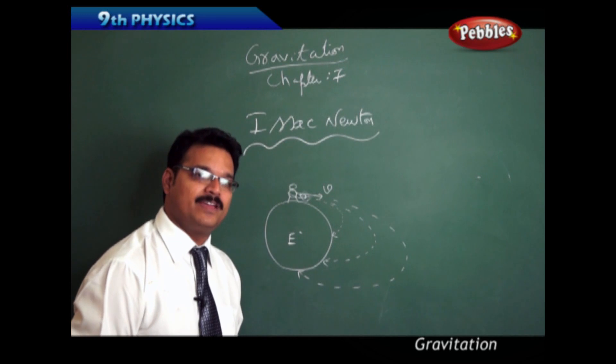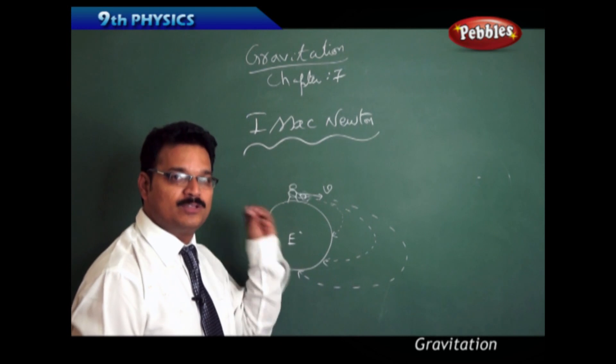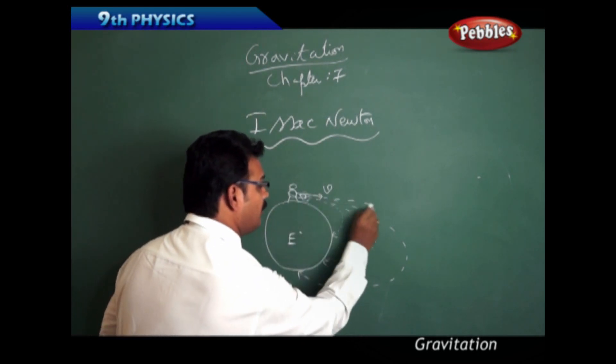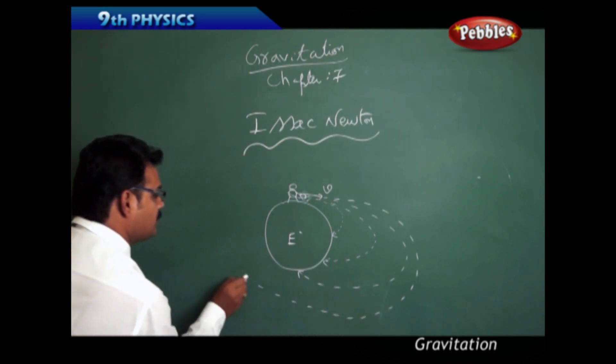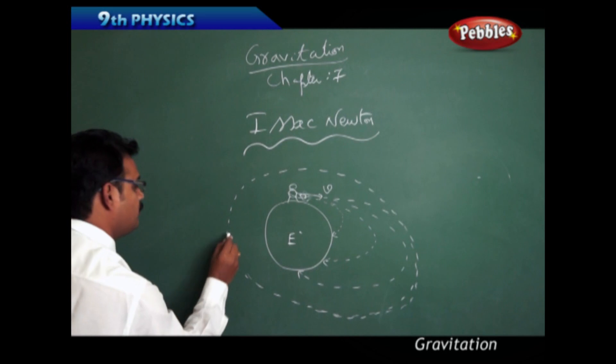In that way, that person increased the speed of the ball such that at one particular speed, one particular very high speed when he threw, the ball started rotating around the earth continuously.